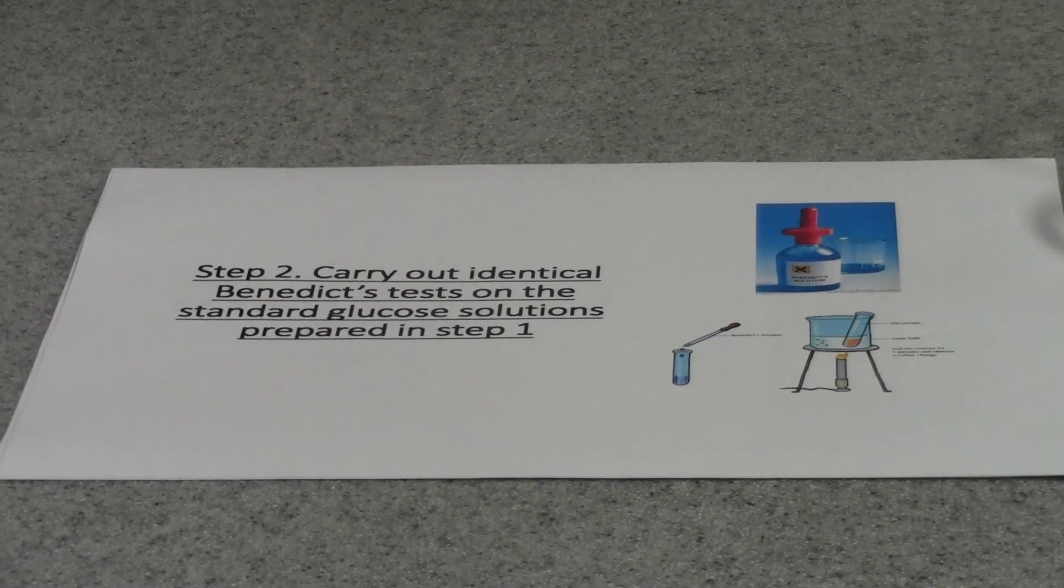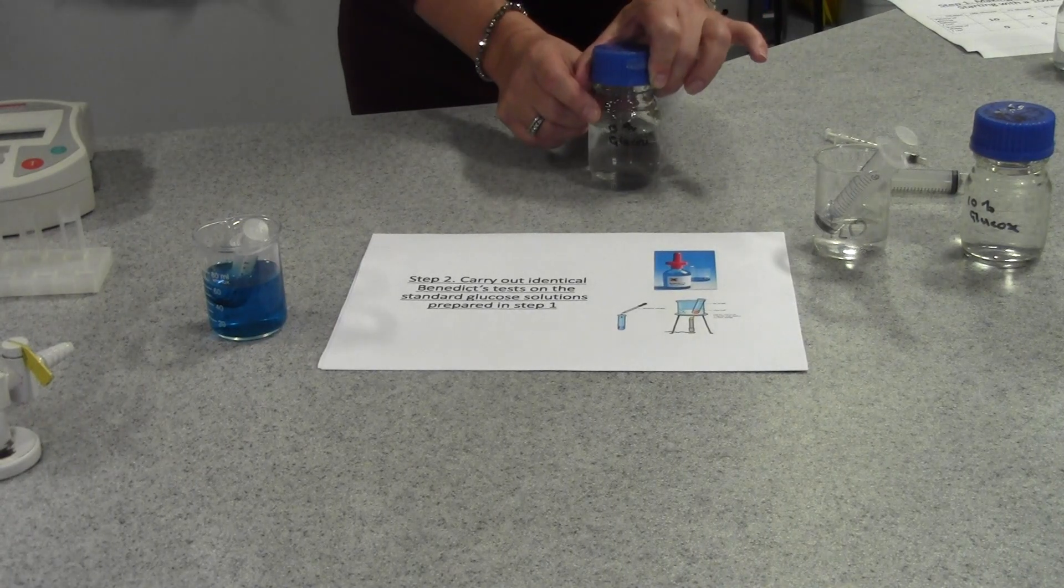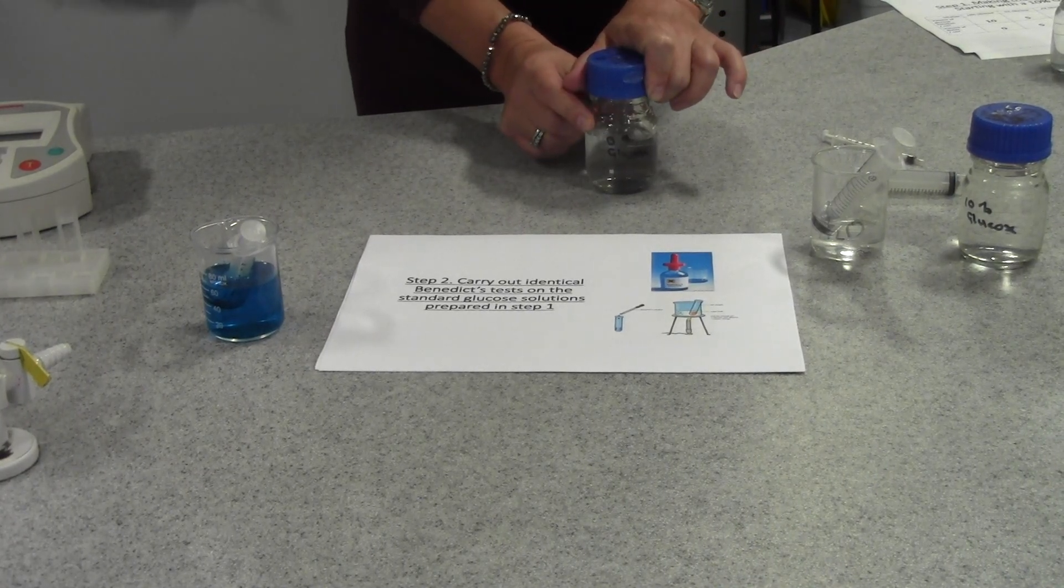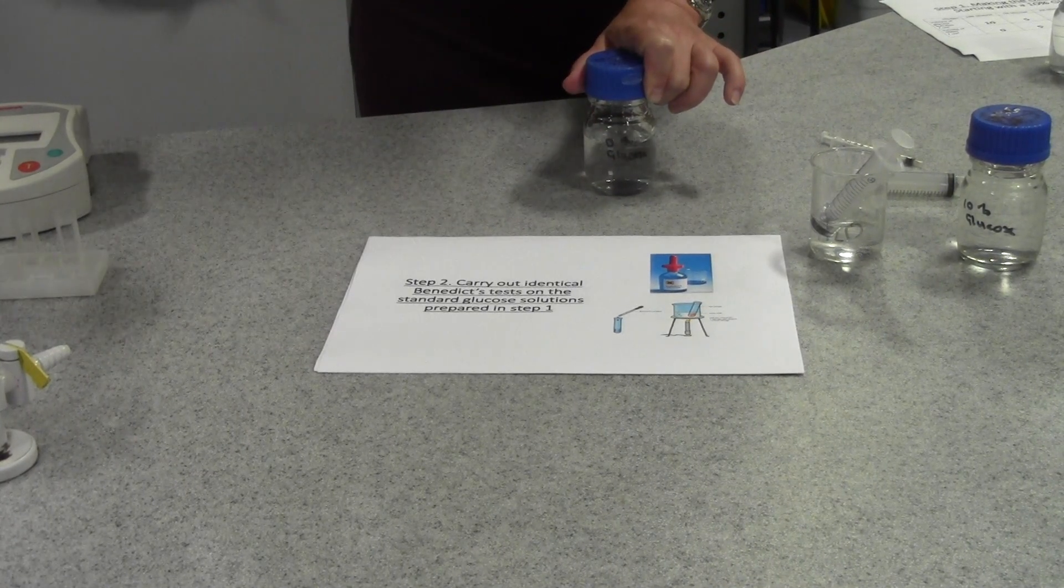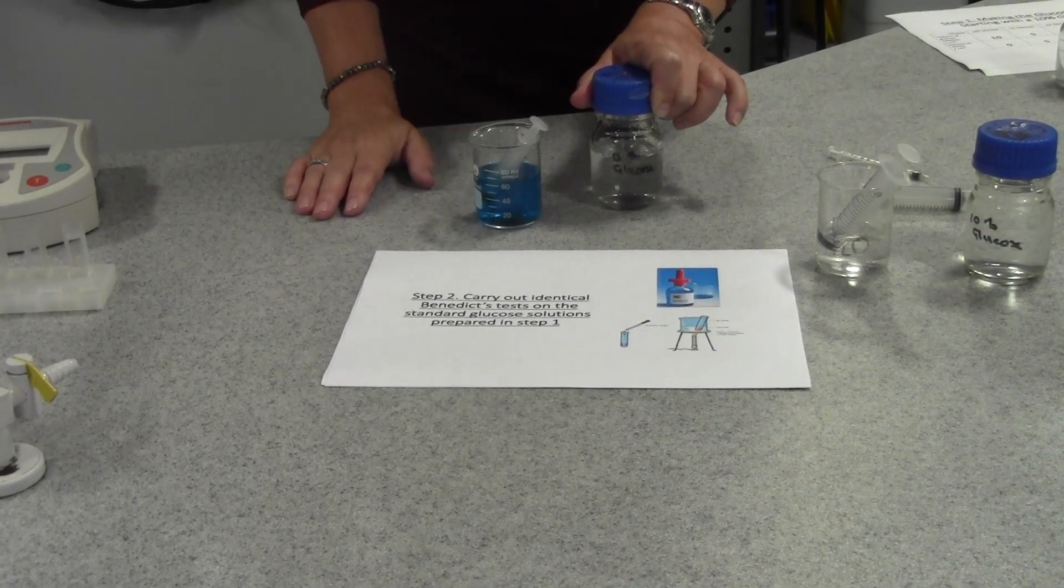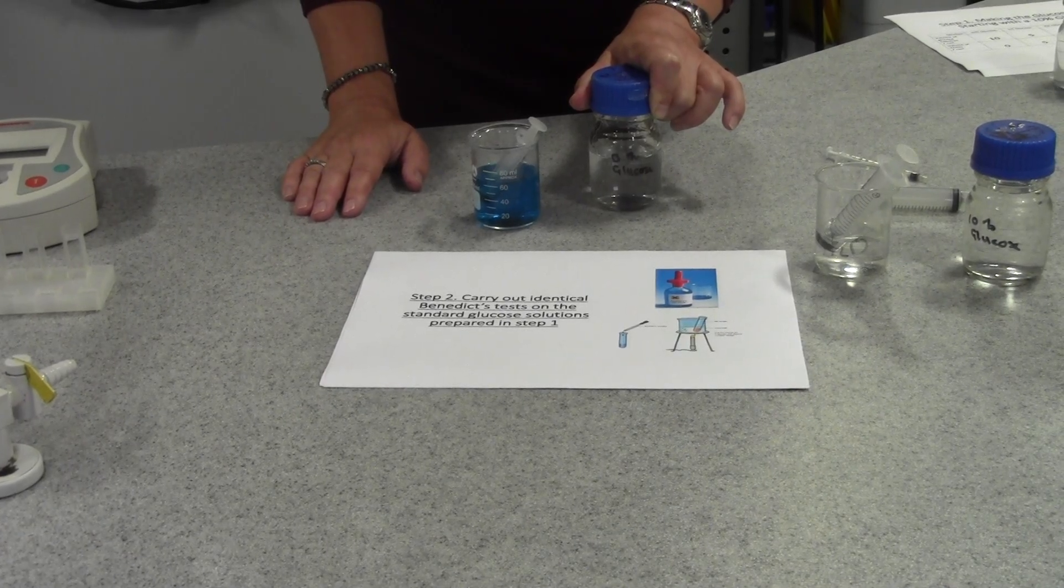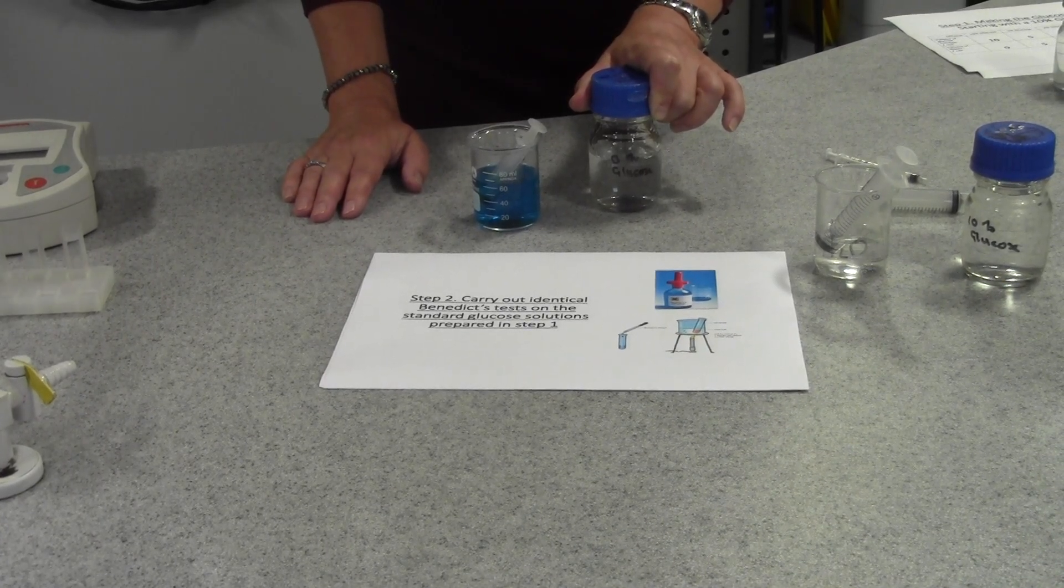To carry out a Benedict's test to each solution we will take 1 centimetre cubed of the solution in the test tube and we will add 5 centimetres cubed of Benedict's. We will then place the solutions in a water bath at 90 degrees for 5 minutes for the reaction to take place.